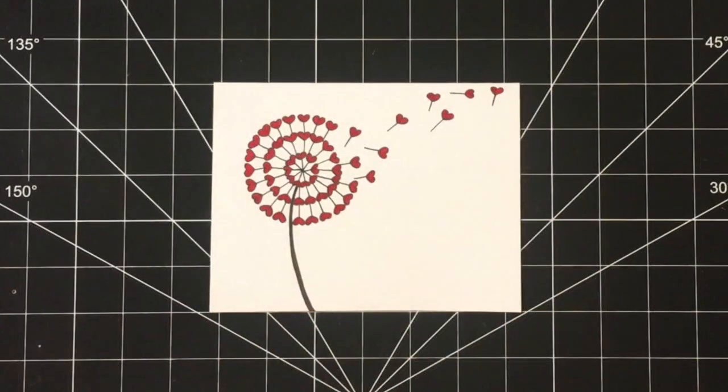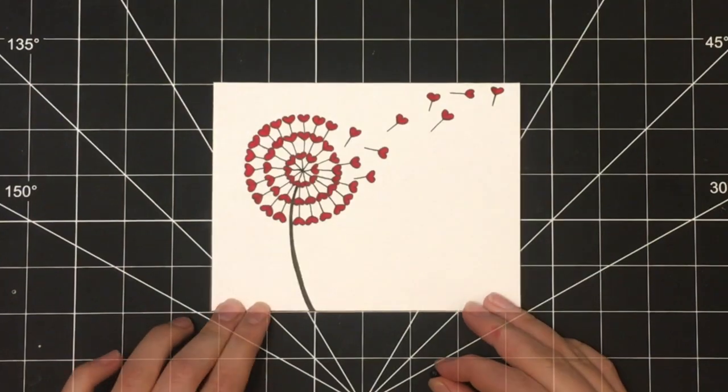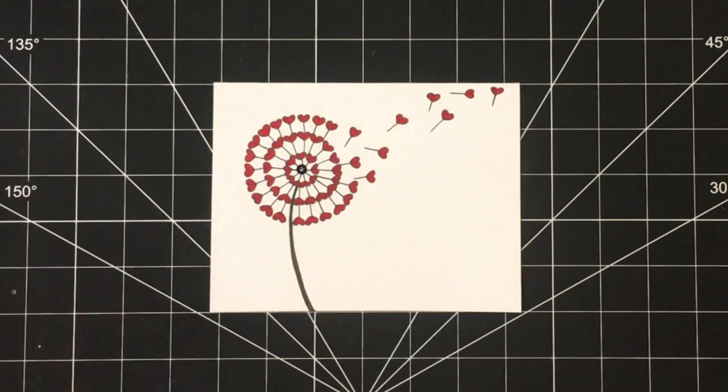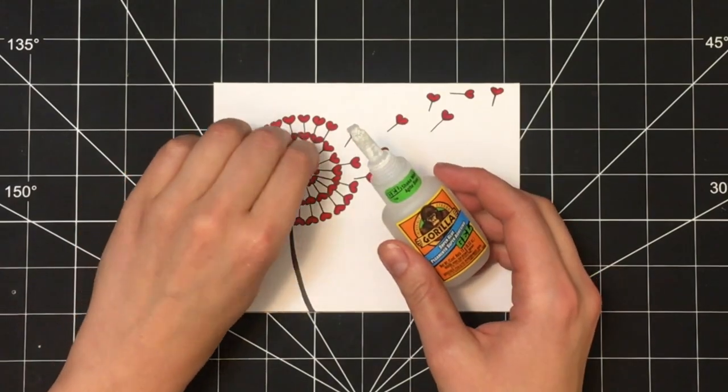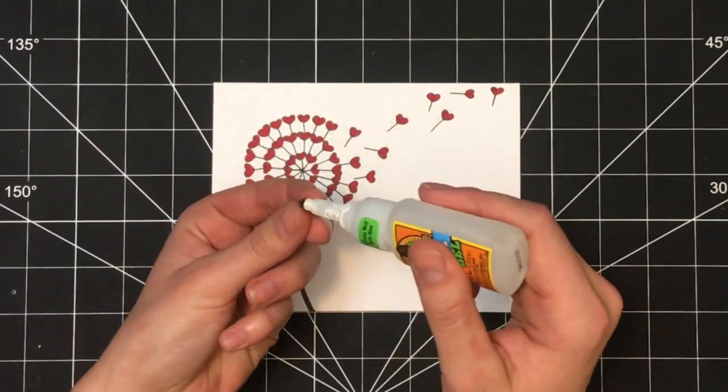Once you have that complete, you could simply leave the card like this or do what I did. I had a black rhinestone and placed it in the very middle of the dandelion. When I was happy with the placement, I used some fast-drying glue and glued it on.